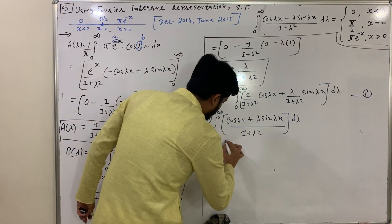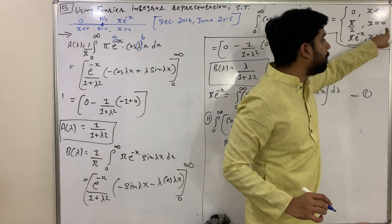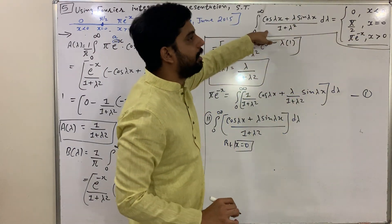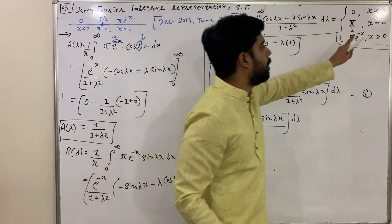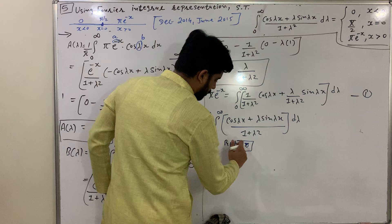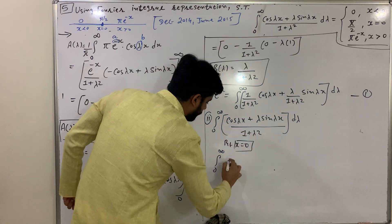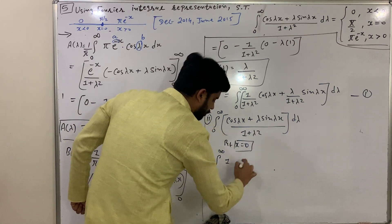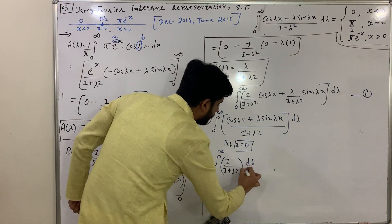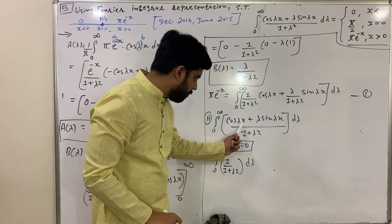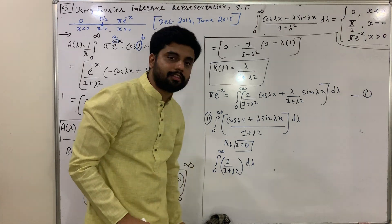Now to verify the case x = 0: put x = 0 into the integral. cos(0) = 1 and sin(0) = 0, so the integral becomes: integral from 0 to infinity of 1/(1 + λ²) dλ.